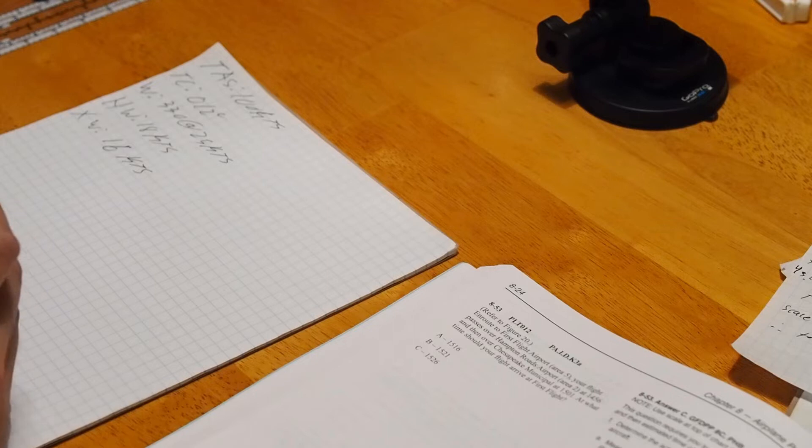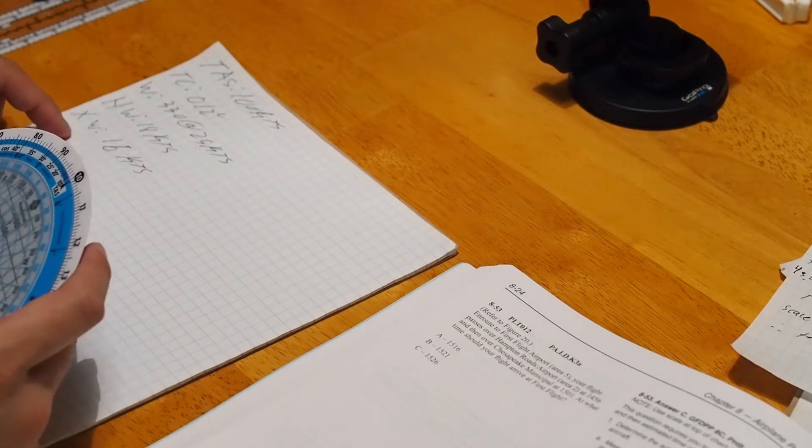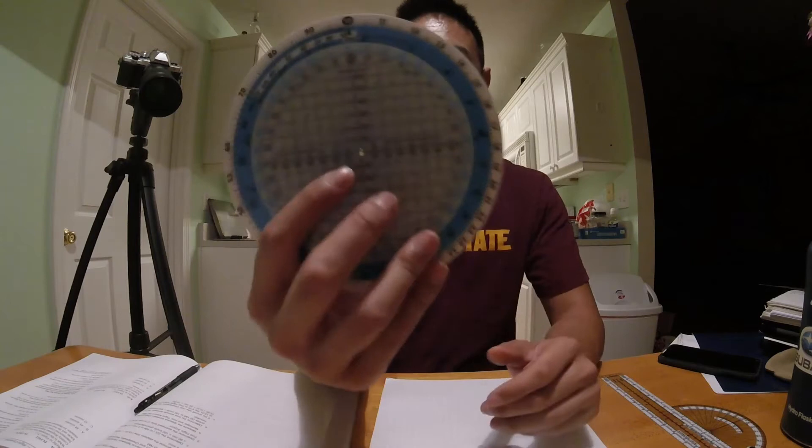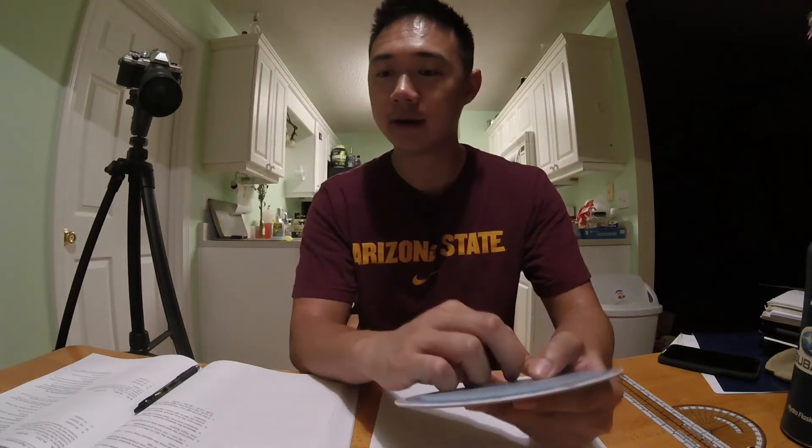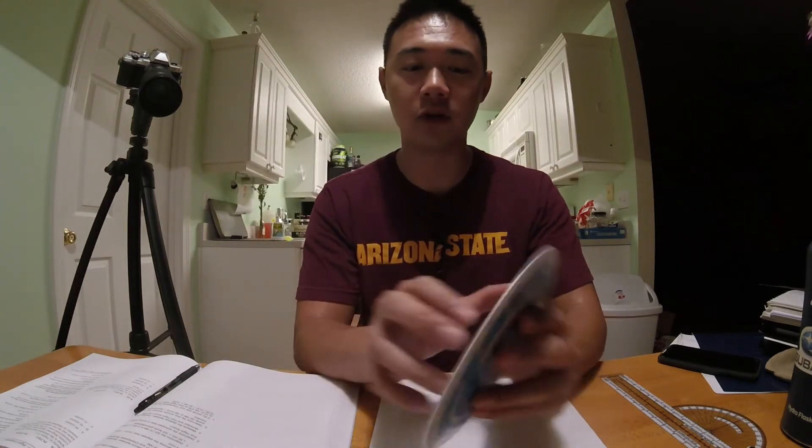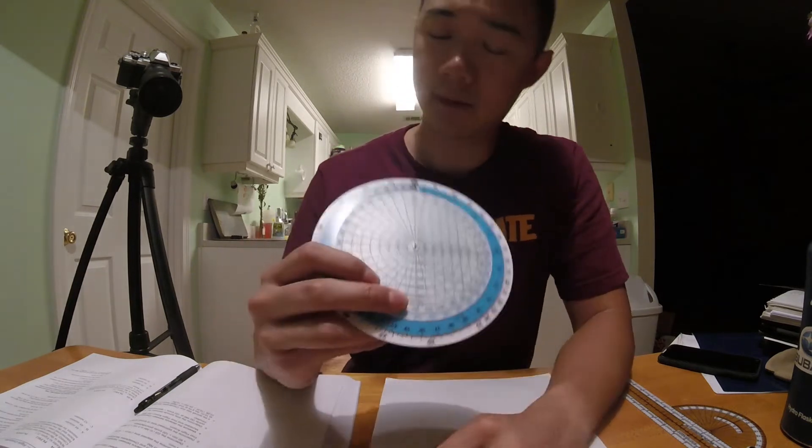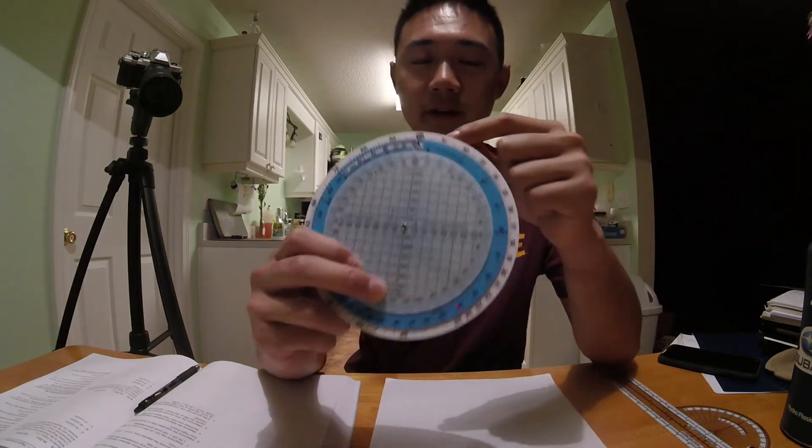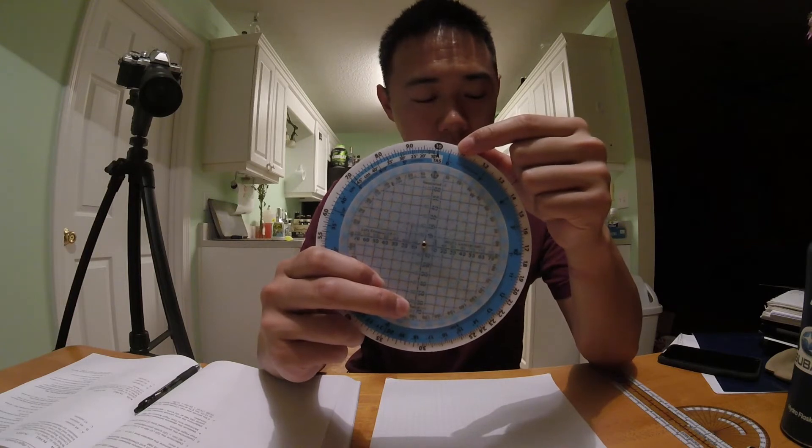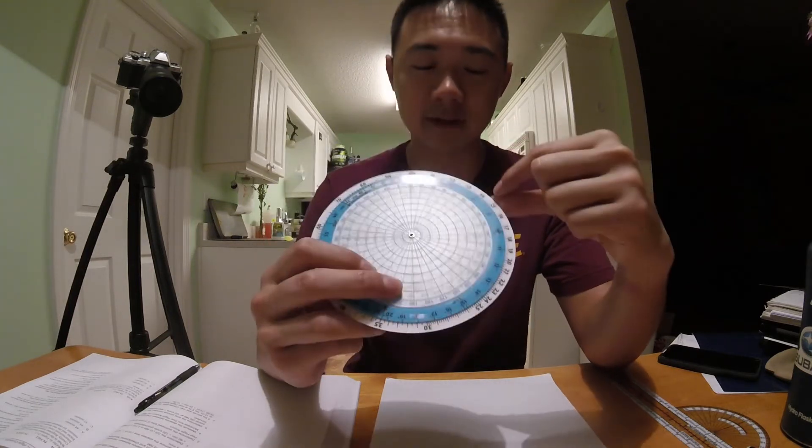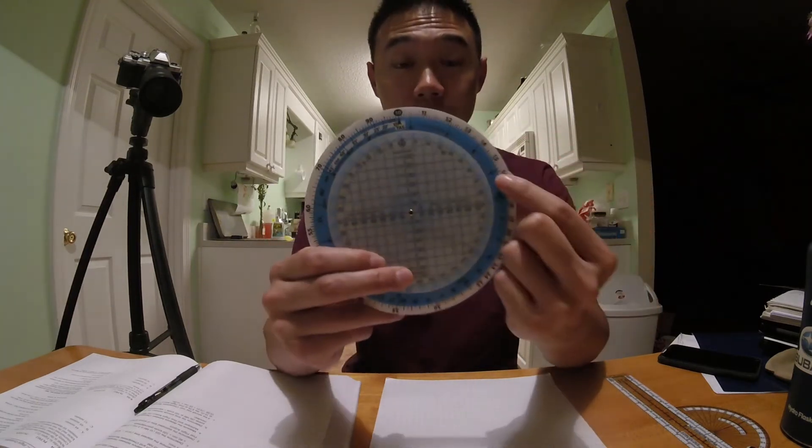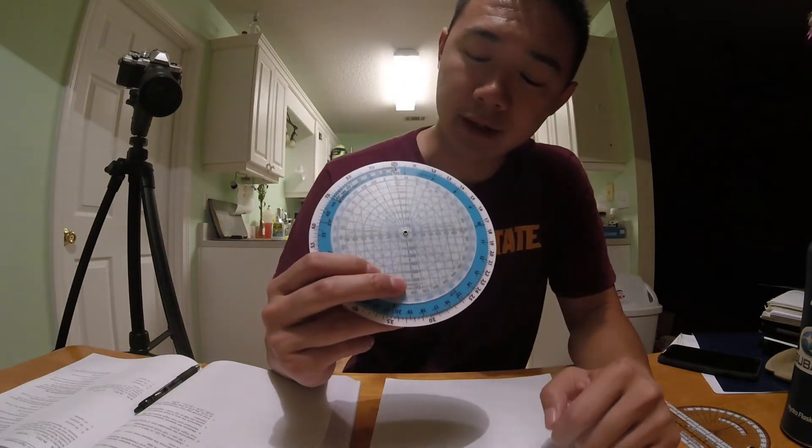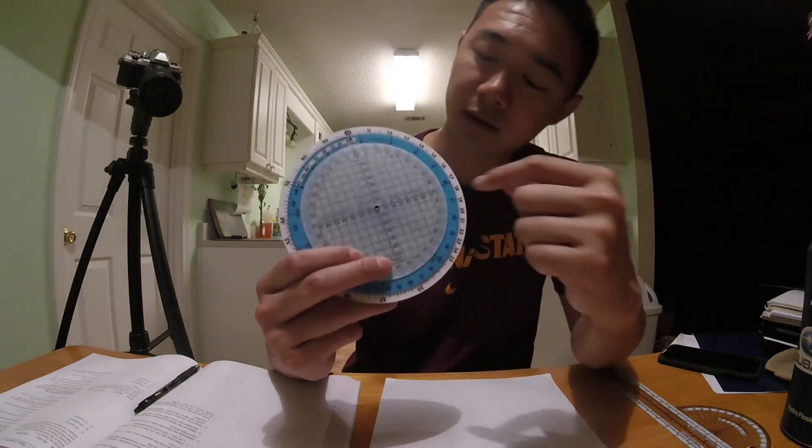So we saw that our crosswind was 16 knots from the east, based on this, because it's on the left side. And now we go to these rings out here. You notice how we have, you use your wind speed up here. So 16 knots, which ends up being right about here. And then you see what angle that associates with on the blue ring.